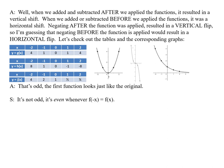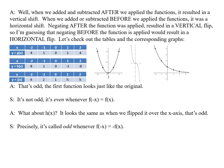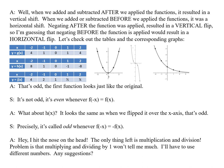That's odd. The first function looks just like the original. It's not odd. It's even whenever f(-x) = f(x). What about h(x)? It looks the same as if we flipped it over the x-axis. That's odd. Precisely. It's called odd whenever f(-x) = -f(x).